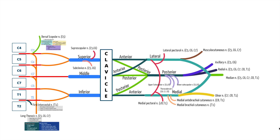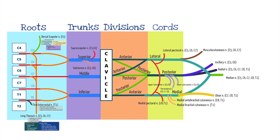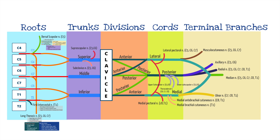On the last video, we went over how the brachial plexus is split into sections called roots, trunks, divisions, cords, and terminal branches. We talked about the origins of the brachial plexus in the nerve roots C5 to T1, and we talked about the three nerves that branch early on in the brachial plexus. Today, we're going to advance that discussion by talking about the trunks and divisions of the brachial plexus.